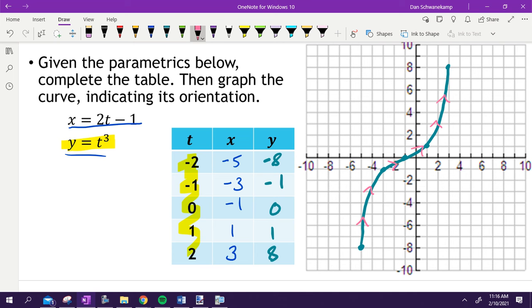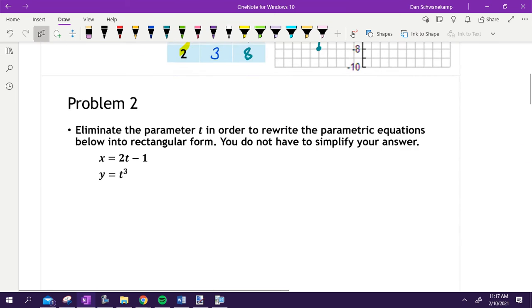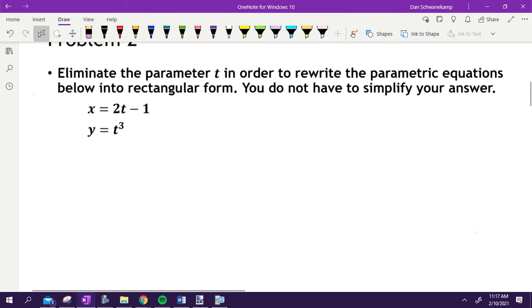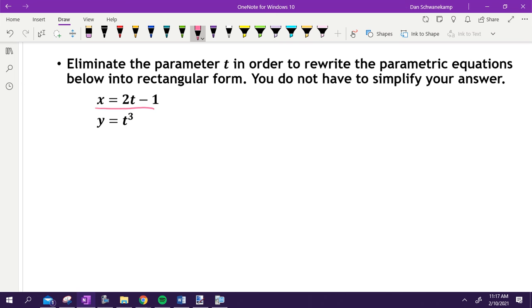We're going to do some whiteboards today, so we're going to continue with what we're doing. For the next problem, take those same two equations and eliminate the parameter t in order to rewrite that equation in rectangular form. So you do not have to simplify your answer, but you're writing this. Instead of an x, t equation, and a y, t equation, write it as a single equation with only x and y in it. You can talk with your neighbor if you need to. Go.